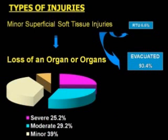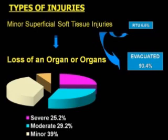These injuries varied from minor superficial soft tissue injuries to extensive devastating injuries resulting in loss of an organ or organs. Among the injured, 25% had severe injuries and 29% had moderately severe injuries, while others were minor. A small percentage — 6.6% — had only superficial soft tissue injuries; they were treated at the MDS and returned to their respective units. 93.4% of all casualties were evacuated from the field.